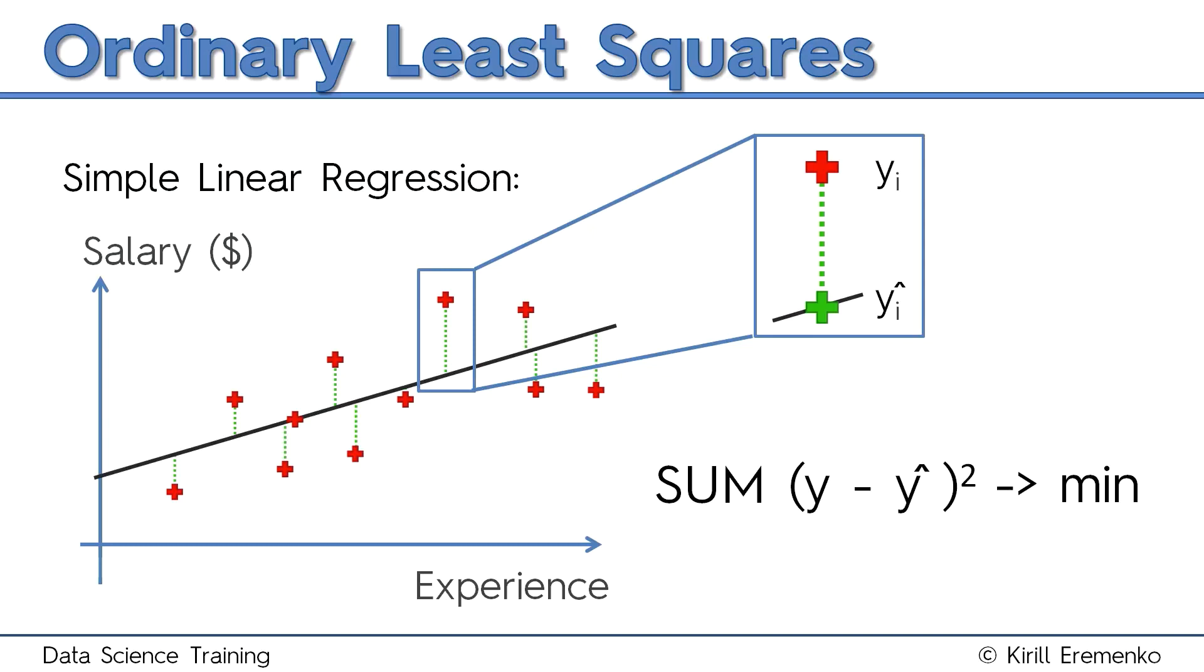The linear regression draws all possible trend lines through your data and counts the sum of those squares every single time, and it records it. And then it finds the minimum one. So it looks for the minimum sum of squares. It finds a line which has the smallest sum of squares possible. And that line will be the best fitting line.